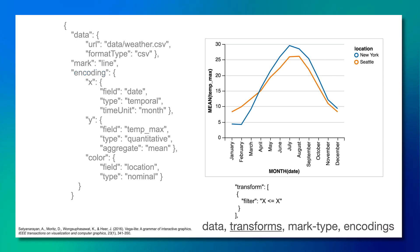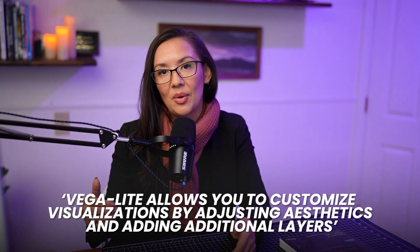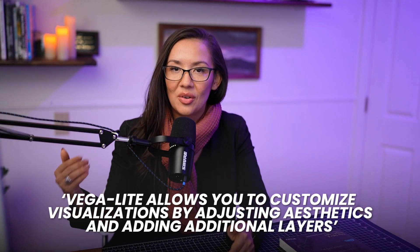The last encoding we're adding is color. We are color-coding the lines — our mark — to specify the different locations, New York and Seattle. Notice we don't have any specific transforms outlined here; by default we're including all of the data in this visualization. But if you did want to transform the data, you might consider filtering the information — for example, to show just New York or just Seattle, you would add a transform, specify filter, and set location accordingly. We can continue to add information by layering these various components within the same syntax onto our visualization.